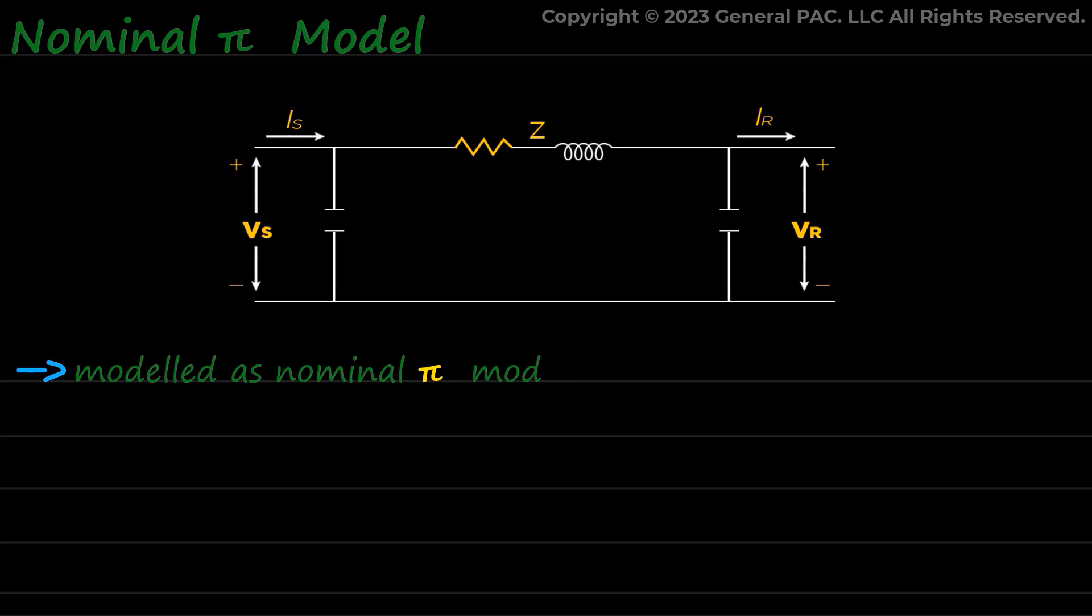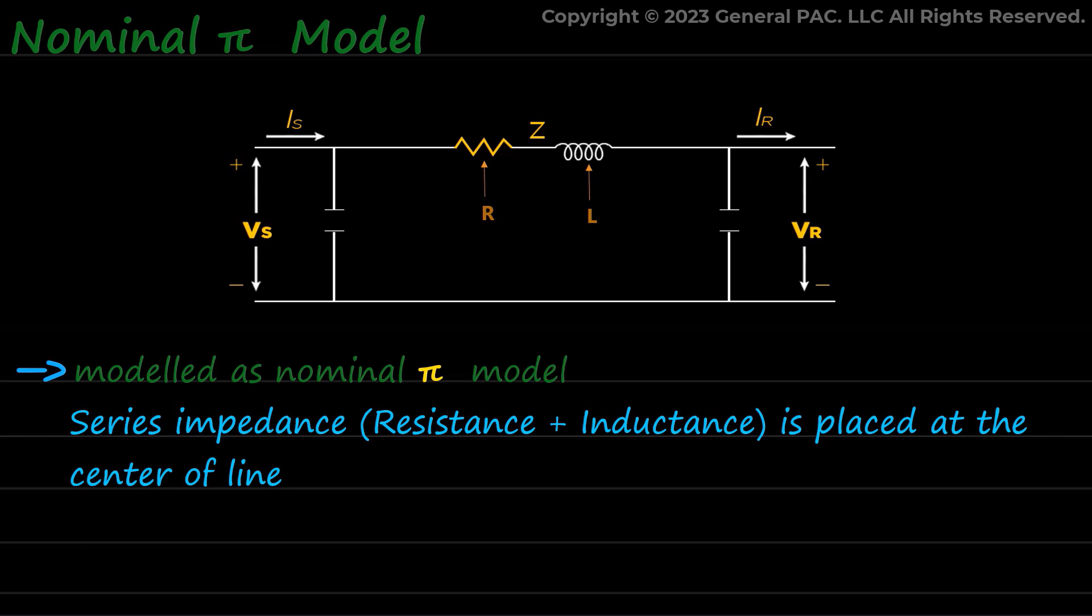Nominal pi model. As we have previously mentioned, the medium transmission line can be modeled as nominal pi model in which the series impedance (resistance plus inductance) is placed at the center of line, whereas one half of the capacitance between phase and neutral is lumped at each end of line, which is shown as the shunt admittance Y in the diagram.